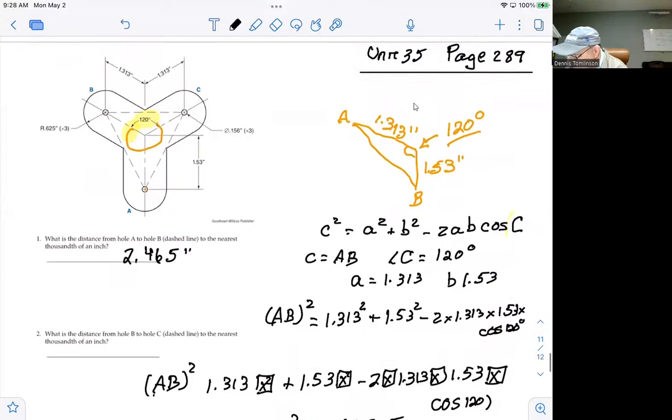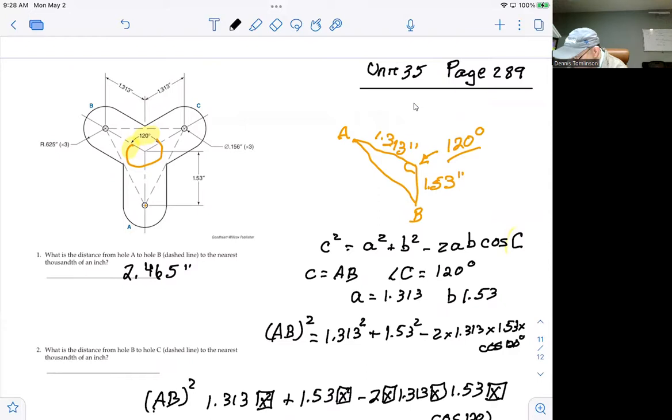And then the second problem says, what is the distance from hole B to hole C, the dashed line, to the nearest thousandth of an inch? So to do that, we go back to the original figure.